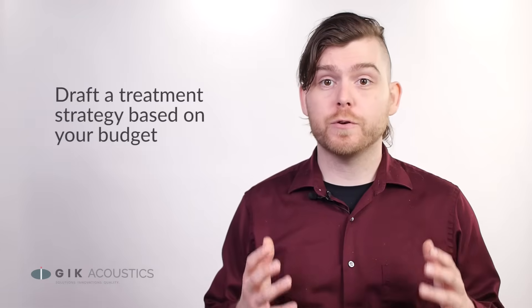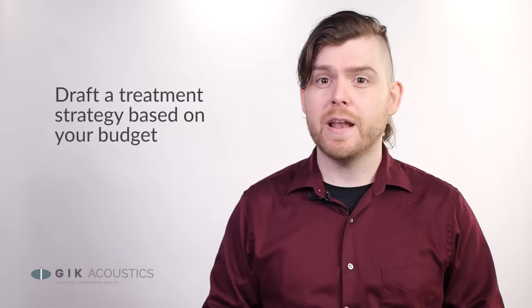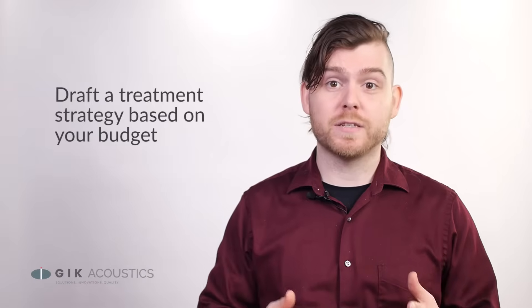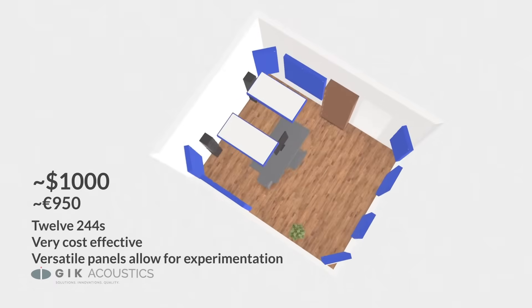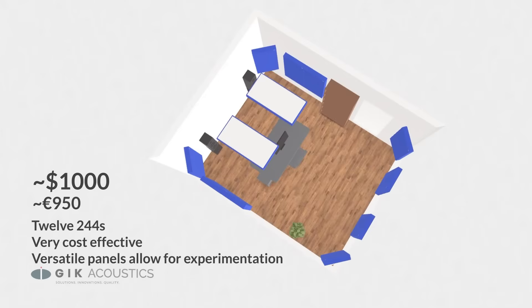So when you're budgeting for your room, first determine how much you're willing to spend on treatment, and then from there we can look at what the most optimal treatment is based on your budget. Let's take a look at a typical small size studio and see what kind of treatment we end up with at different budgets. At around $600, you can treat your first reflections with 2x4x2s and your corners with 2x4x4s. With this treatment, you'll have a noticeable improvement in your room with a cleaner stereo image. You can bundle and save on treatment at this level by starting off with one of GIK's room kits, which are a great way to kickstart your treatment. With a budget of $1,000, you can treat your room with 2x4x4s, which arguably gives the most cost-effective improvement of any GIK product within this budget.